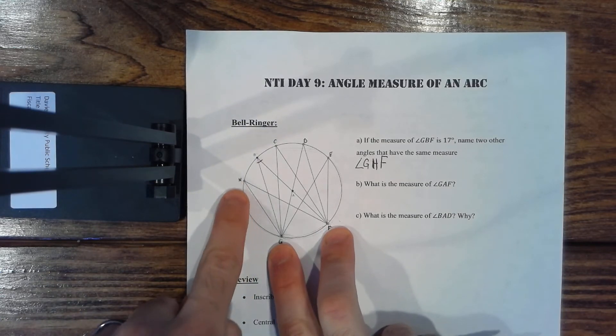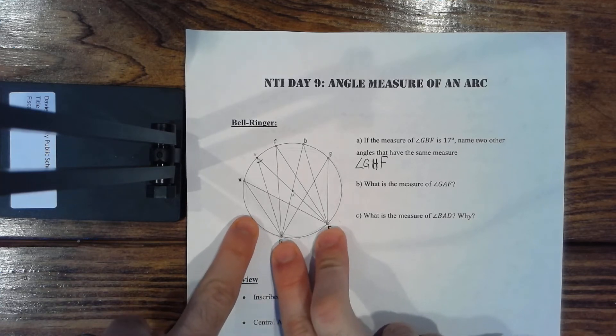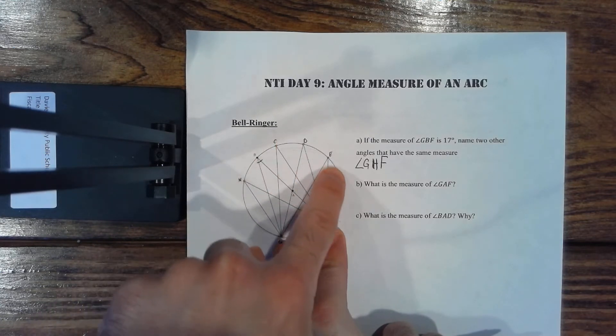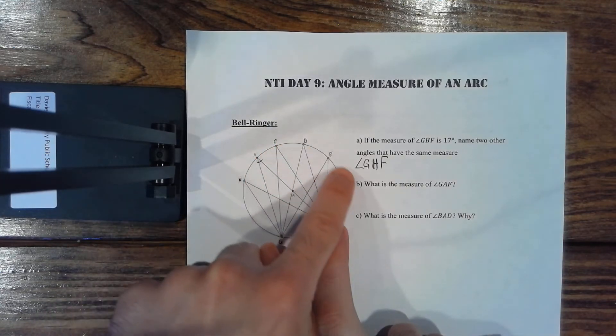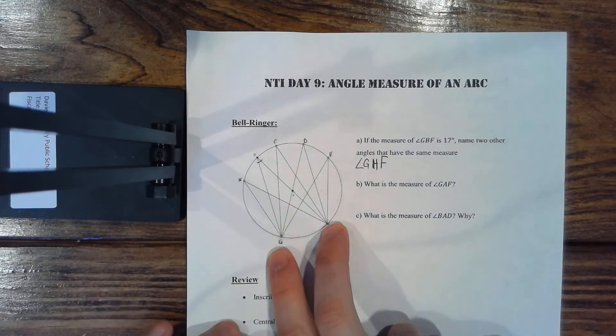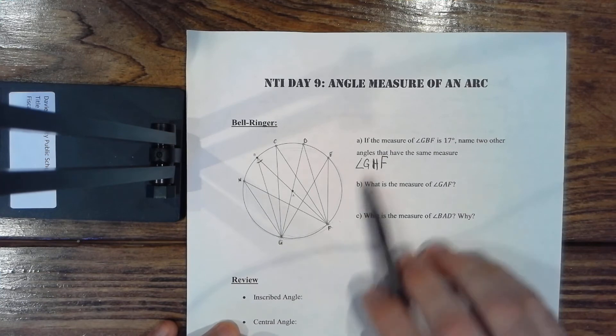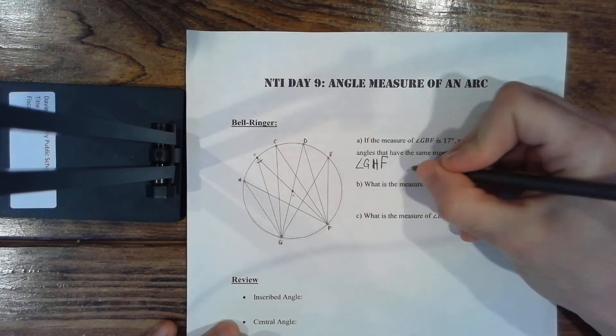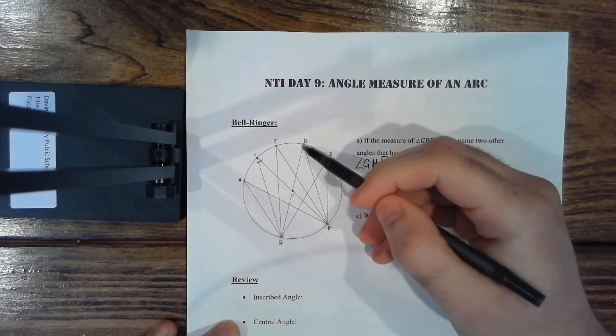So if you picture me having this angle formed by these three points with my three fingers, if I move this third point anywhere along this major arc between G and F, it's going to be the exact same angle measure. That's why any one of these angles will work as long as G and F are on the outside. So angle GHF, angle, and I'll just say GDF, these are all 17 degrees.